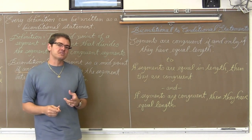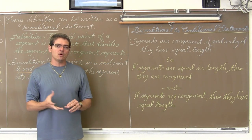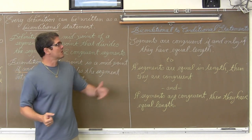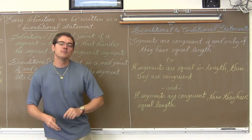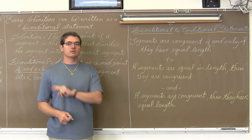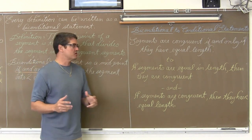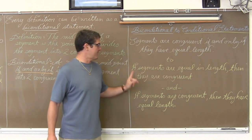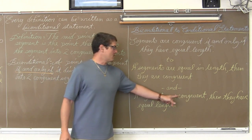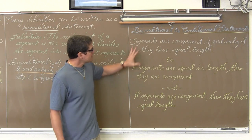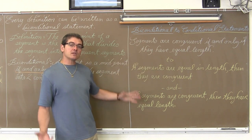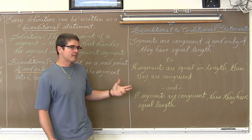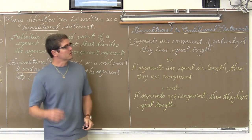How do you take a biconditional statement and convert it into conditional statements? We only have a biconditional if we can write a conditional statement and its converse and have them both be true. So when given a biconditional statement and asked to convert it, you get two conditional statements. For example: "Segments are congruent if and only if they have equal length" gives us — if segments are equal in length then they are congruent, and if segments are congruent then they have equal length. That is "if P then Q" and the converse "if Q then P."